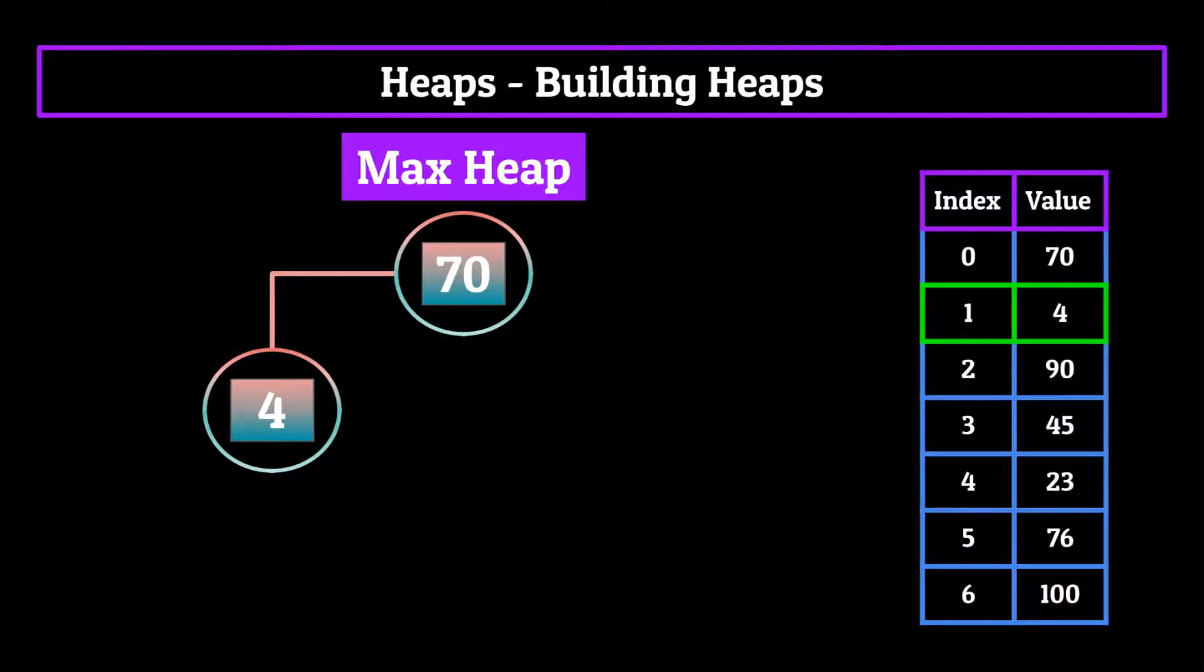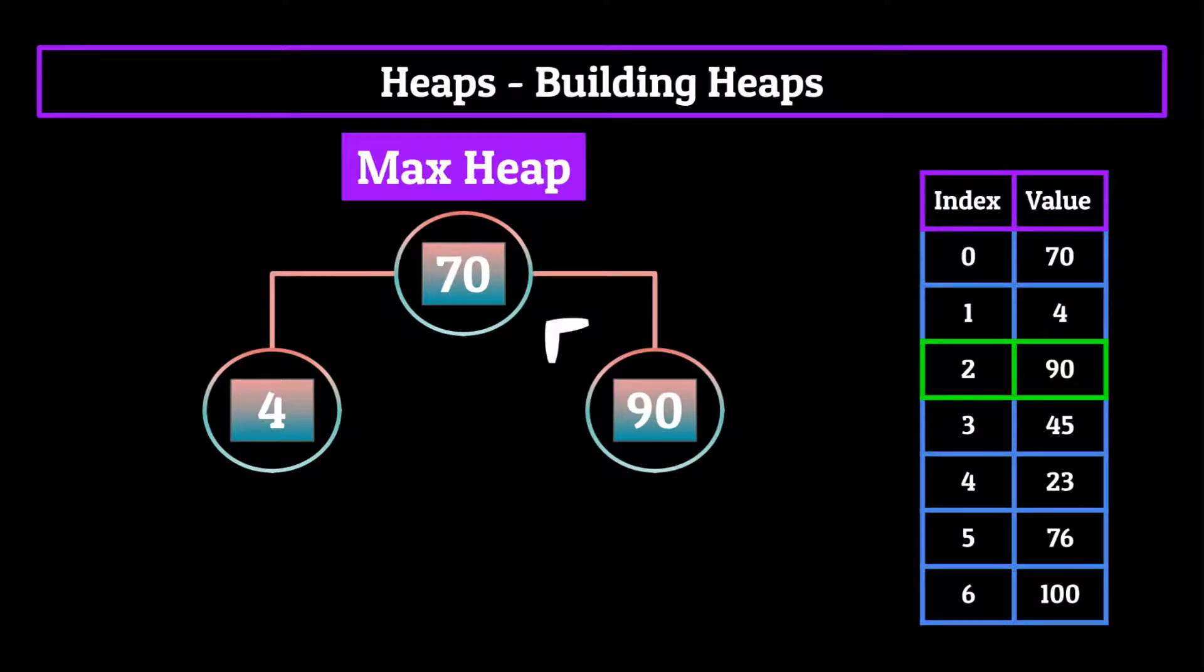Now we just repeat steps two and three until we've had our heap built. So next, we would add the integer 90. And since the left slot is already taken by our four node, the right slot ends up being the leftmost location on our heap. So we would add that there. And then since 90 is greater than 70, we would swap the 90 and 70 nodes. Doing this keeps the max heap property intact.